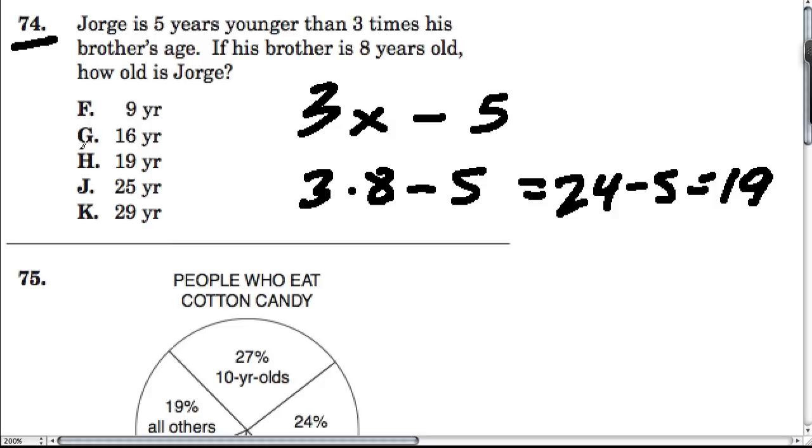So how old is Jorge? Well, he's 19 years old, which is exactly 5 less than 3 times his brother's age, and his brother's age is 8, so it's 5 less than 24.